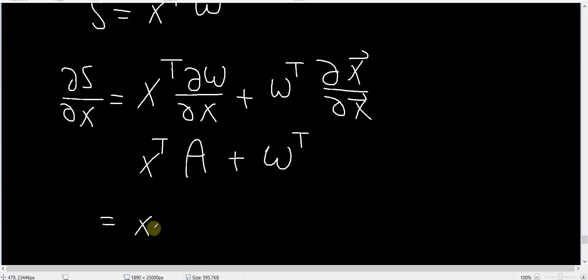Now W transpose is really equal to X transpose A transpose. So this is equal to X transpose A plus X transpose A transpose, and so we have this equal to X transpose multiplied by A plus A transpose.